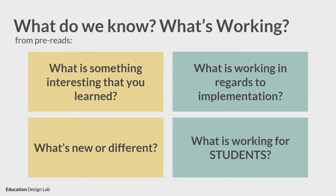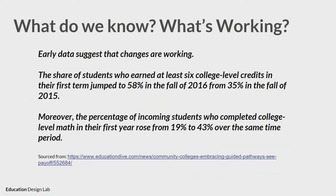Where are those aha moments? I call them sometimes 'non-aha ahas' — things that we're like, yeah, we know it's working, but it still hasn't happened at our institution, and we need to build on those. So some things that jumped out to me from the pre-reads — from the Education Dive — is that the share of students who earned at least six college credits jumped, and the percentage of incoming students who completed college-level math in their first year rose from 19% to 43% with the implementation of guided pathways. And as Christy said, once they get done with that their first semester, they are more likely to retain and be successful within their institutions.